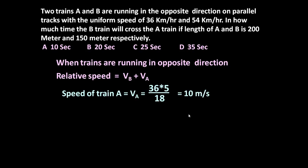Now speed of train B is equal to 54 kmph, or 54 into 5 divided by 18, is equal to 15 meters per second. So we got speed of train A and speed of train B.